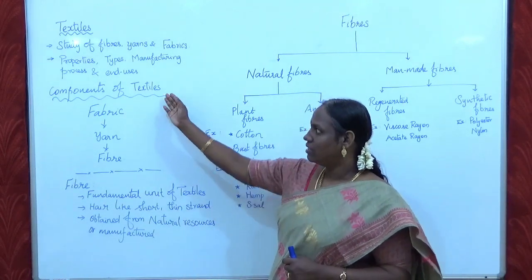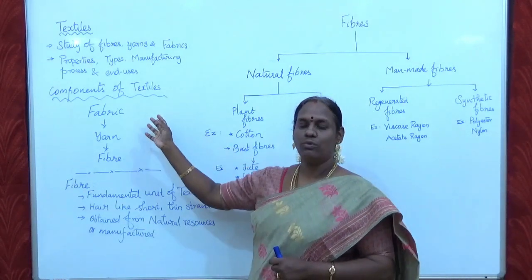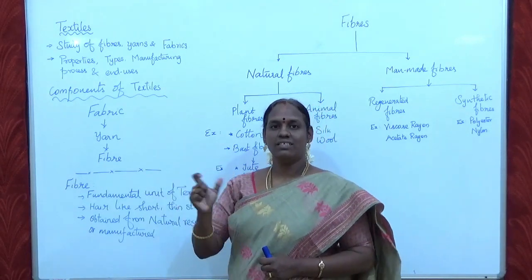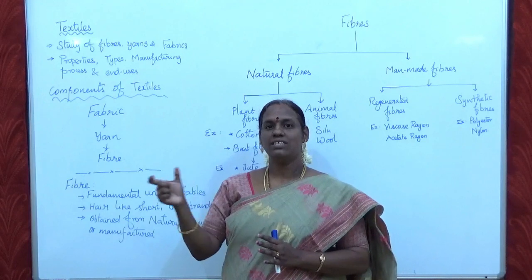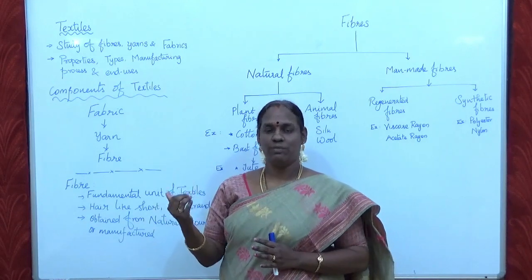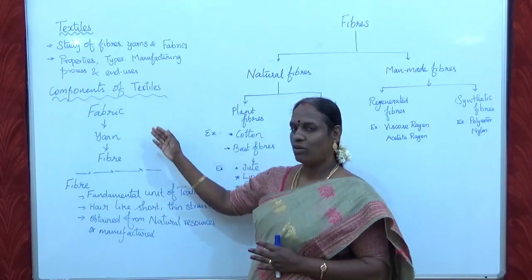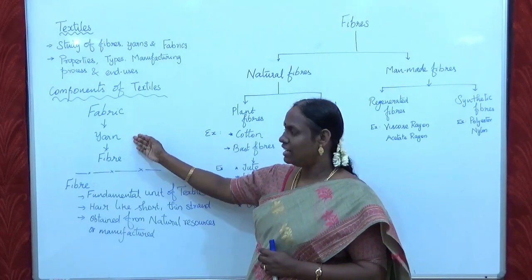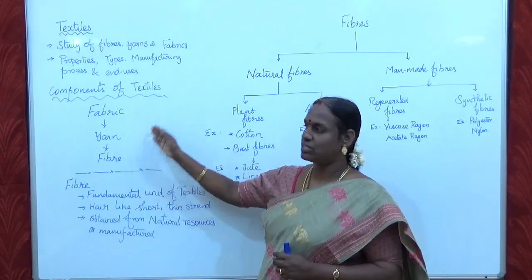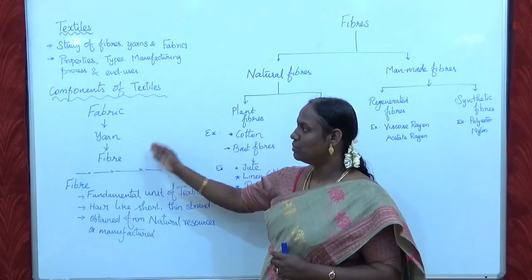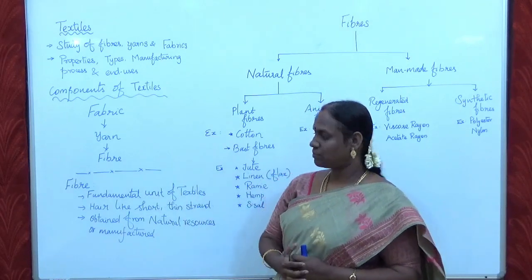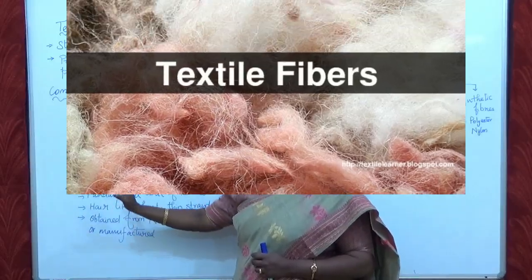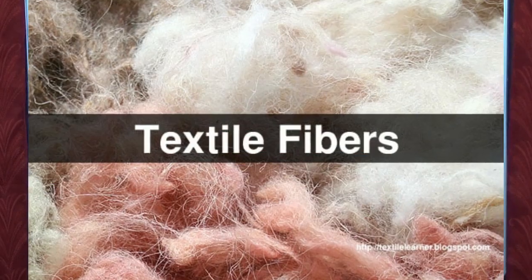Today we are going to discuss about various components of textiles. Textiles commonly means fabric, but there are various components. Fabric comprises of yarn, and yarn is composed of fibres. So these are the basic components of textiles.